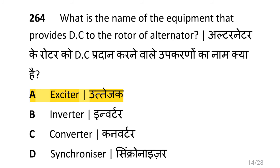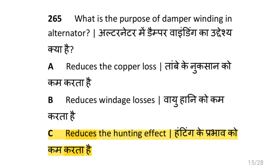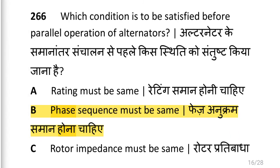What is the name of the equipment that provides DC to the rotor of an alternator, i.e. exciter? What is the purpose of damper winding in an alternator, i.e. to reduce the hunting effect?